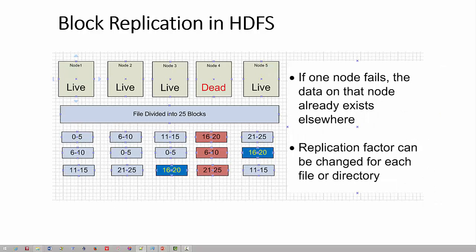For example, if node 4 fails in the cluster, blocks 16 to 20 are no longer available. Similarly, blocks 6 to 10 and 21 to 25 are unavailable because they reside on node 4. However, blocks 16 to 20 are already replicated to nodes 3 and 5, and blocks 6 to 10 are replicated to nodes 2 and 5.